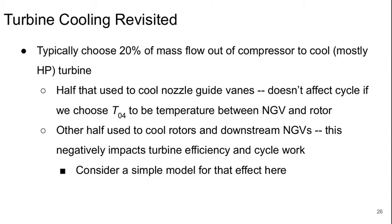Now let's talk about turbine cooling. We typically choose to have about 20% of the mass flow from the compressor be used for cooling in a modern engine, and most of this is used in the high pressure turbine. About half of that is used to cool the nozzle guide vanes in the very first blade row — this doesn't affect cycle efficiency if we define T04 as the temperature between the nozzle guide vanes and the first rotor. The other half cools the rotors and downstream nozzle guide vanes, and that negatively impacts turbine efficiency and cycle work.